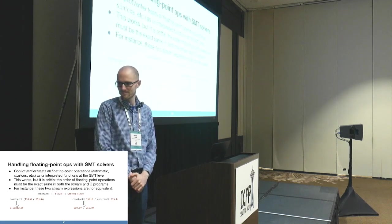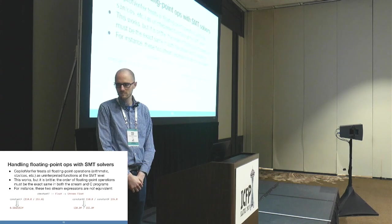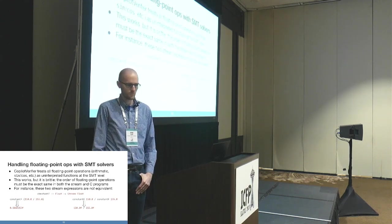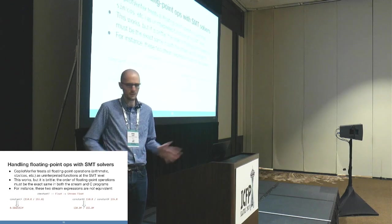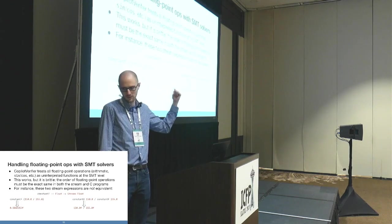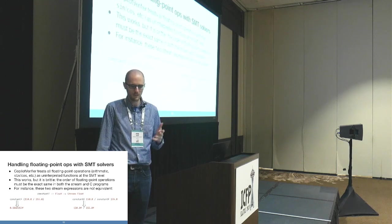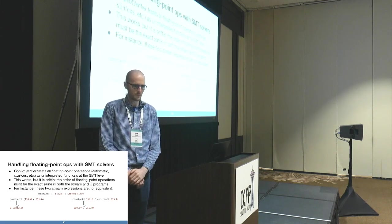Q: Bi-simulation is generally undecidable for Turing-complete languages — is Copilot not fully Turing-complete, or are there programs you can't prove equivalent? A: There are certainly programs we cannot prove equivalent — we don't claim to skirt around undecidability. Also keep in mind that we're not directly proving bi-simulation; we're proving a separate property which implies bi-simulation. So the story is a little different as far as the theoretical limits. But yes, certainly there are limitations.